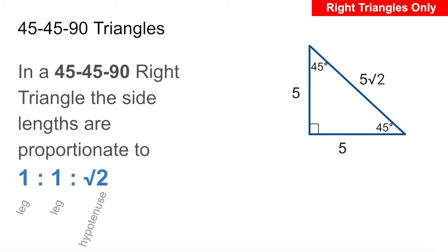So the first one is a 45, 45, 90 triangle, and we call it that because the angles are 45 degrees, 45 degrees, and 90 degrees. So in a 45, 45, 90 right triangle, we know something special about the side lengths. They're always going to be proportionate to 1 to 1 to root 2, and what that means is that the two legs, the two shorter sides of the triangle, are equal, and the hypotenuse is going to be root 2 times longer than the legs.